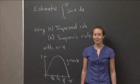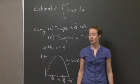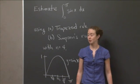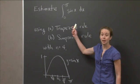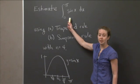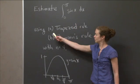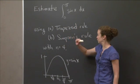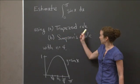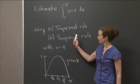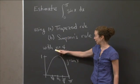Welcome back to recitation. In this video, I'd like us to practice some of the approximation techniques we've learned in the lectures. So in this one specifically, what I'd like us to do is estimate the integral from 0 to pi of sine x dx using these two approximation methods. A is going to be using the trapezoid rule, and B is going to be using Simpson's rule. In both cases, I'd like you to do this for n equal 4.